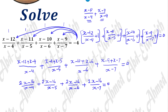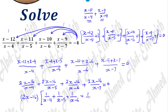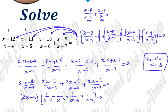Notice that all numerators equal 2x minus 16, so we can factor out (2x minus 16) as a common factor from all four fractions. We get: (2x minus 16) times (1 over (x minus 4) plus 1 over (x minus 5) plus 1 over (x minus 6) plus 1 over (x minus 7)) equals 0. From the first factor: 2x minus 16 equals 0, giving x equals 8 as the first value of x satisfying the equation.